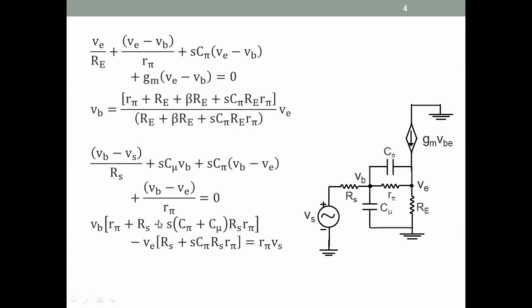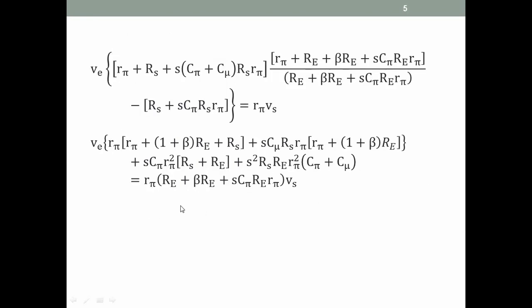So this big expression—we cross multiply this denominator with this, and the denominator goes to the other side. Then we will simplify the left-hand side. This RE, β·RE, sCπ·RE·rπ goes on the right-hand side. On the left-hand side, this times this gives an s² term. There are two capacitors; there should be an s² term. So this is ve into something big equal to something times vs. rπ incidentally will cancel here.